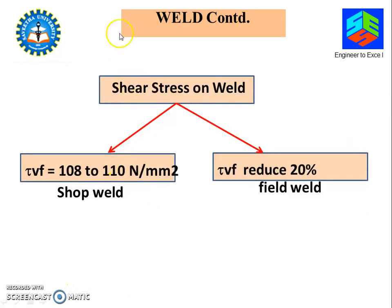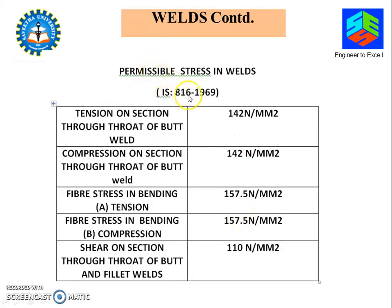This τ_Vf is the shear stress on the weld. If it is a shop weld, we can take the value 108 to 110 N/mm². Whereas in the case of a field weld — meaning welding done in the field where you cannot have better quality control — the stress should be reduced by 20 percent. IS 816:1969 gives the values of τ_Vf. Here we will be taking 110 or 108 N/mm², considering only the shear stress.